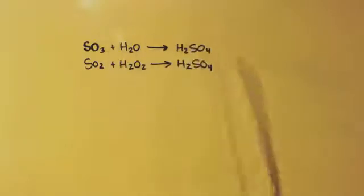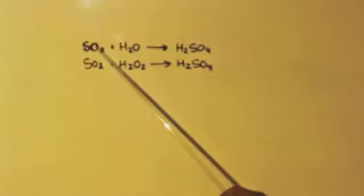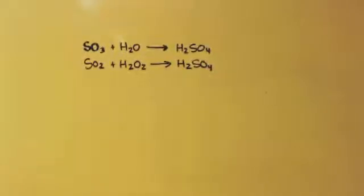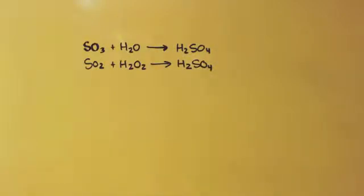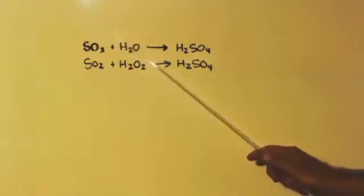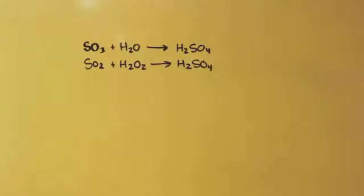If you try the SO3 route, keep in mind that adding sulfur trioxide directly to water is a violent exothermic reaction that can get out of control. The way to do it is to already have concentrated sulfuric acid and bubble the SO3 into that — you'll make oleum. Then you dilute the oleum with water to bring it back to concentrated sulfuric acid. That way the reaction isn't violent like it is with pure water.